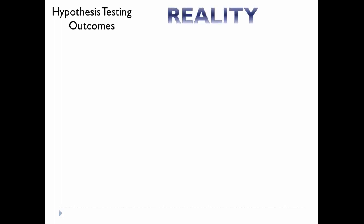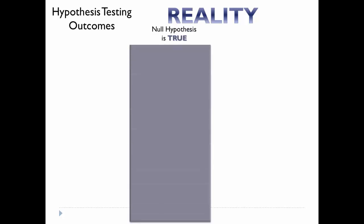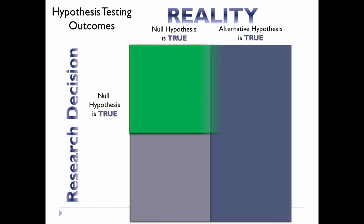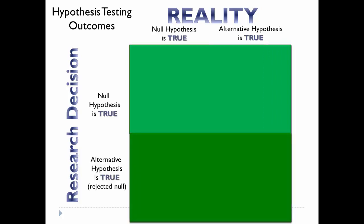Let's apply this example to the hypothesis testing outcomes of Type 1 and Type 2 errors. Assume we know reality — which, of course, we don't really. Reality could be that the null hypothesis is true: we just happened by chance to go to Disneyland on a light attendance day. Or it could be that the alternative hypothesis is true. Now let's look at the research decision. We could decide that the null hypothesis is true — it really was an anomaly — or we could reject the null hypothesis and conclude that the alternative is true: Disney's pricing did indeed have an effect.